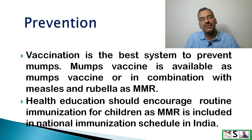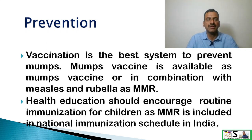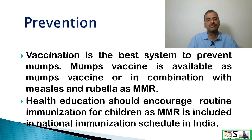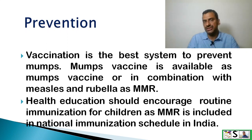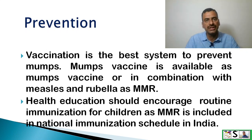How can we prevent mumps? Vaccination is the best way to prevent mumps. Mumps vaccine is available as a standalone vaccine or in combination with measles and rubella as MMR. Health education should be encouraged, and routine immunization should also be encouraged through health education, because MMR is included in the national immunization schedule in India.